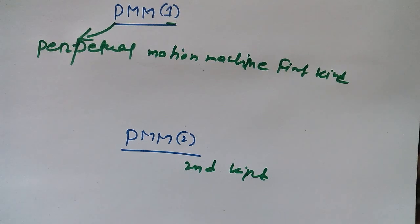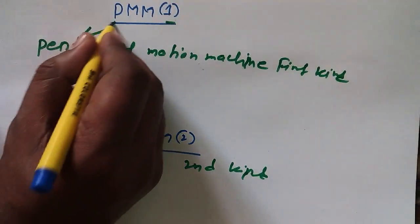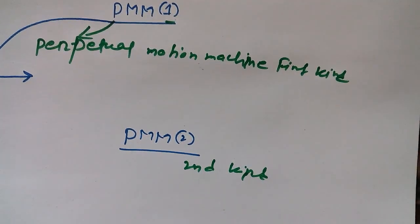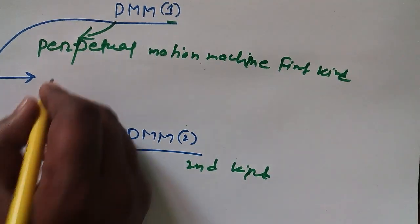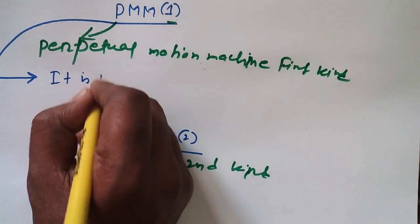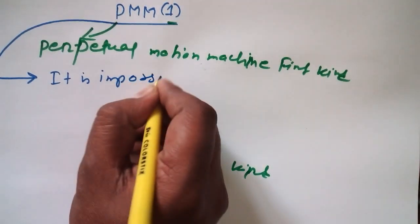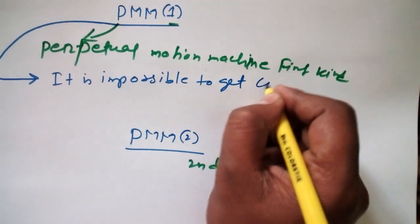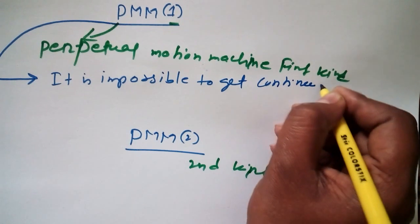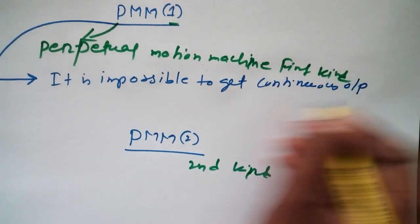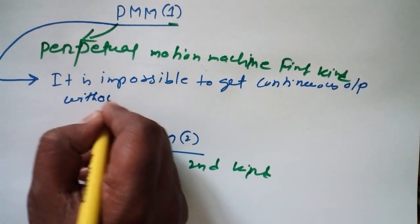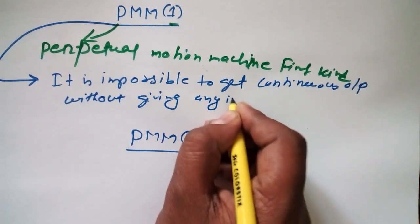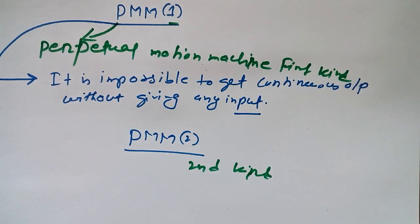Well, what is PMM perpetual motion machine? Actually there is a theoretical concept we have. So according to this, you know, perpetual motion machine first kind, we can define this as it is impossible to get continuous output without giving any input.